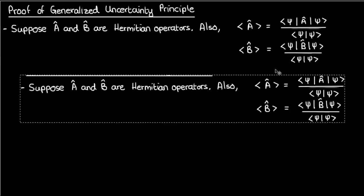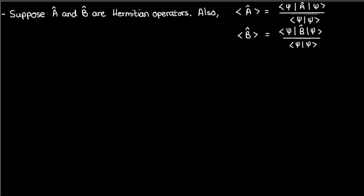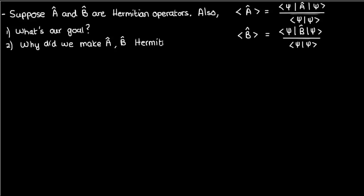So these are our initial assumptions, but there are two questions that immediately arise. The first question is: what's our goal — why are we trying to prove the generalized uncertainty principle in the first place? The second question is: why are we choosing a and b to be Hermitian operators, and not some other types of operators?